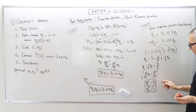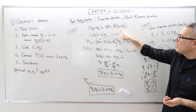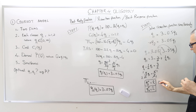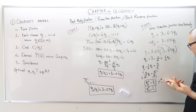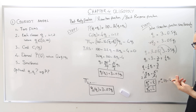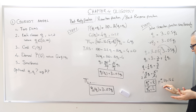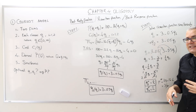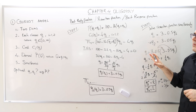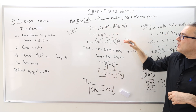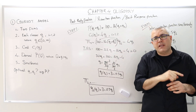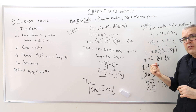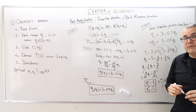These are the Cournot quantities: q1* equals 2 and q2* equals 2. The total quantity is 4 units, so the market price is 100 minus 16 times 4, which equals 36 dollars. To summarize: step one, calculate the best reply functions for both firms; step two, solve the best reply functions simultaneously. The next video will explain why we solve them simultaneously.